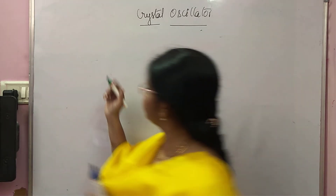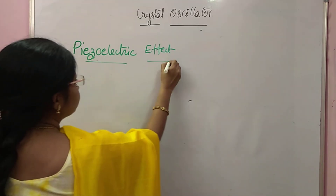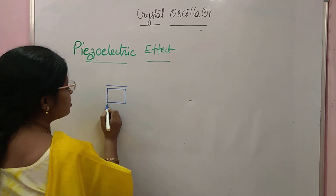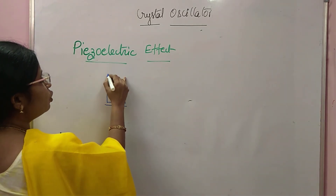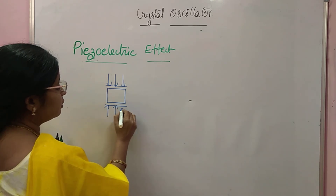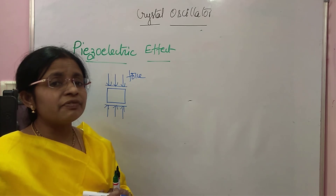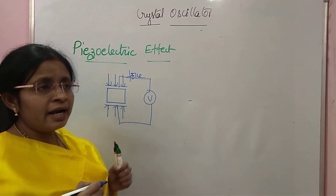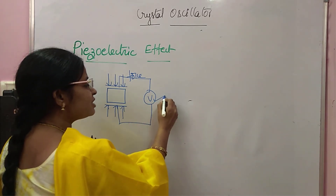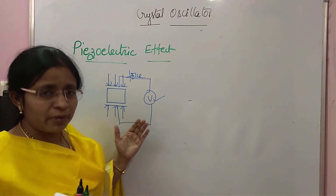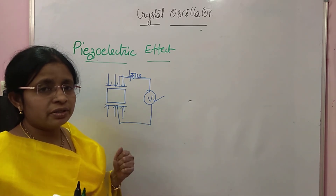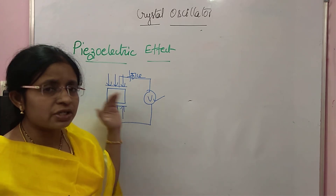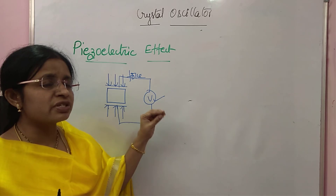What is the concept of piezoelectric effect? Take a crystal — this is the symbolic representation of a crystal. If you apply a force, then the crystal will vibrate. If you connect a voltmeter across this in AC mode, then it reads a voltage. It means the crystal's vibrations will produce an AC voltage. So: take a crystal, apply a force, that force creates mechanical vibrations, and those mechanical vibrations produce an AC voltage.